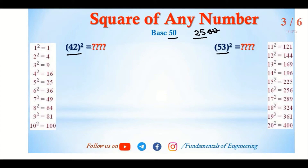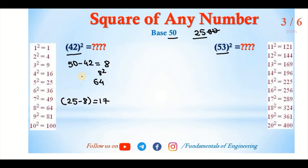For 42: since 42 is less than 50, we find 50 minus 42, which is 8. The square of 8 is 64. Now 25 minus 8 gives us 17. So we write 1764, which is the square of 42.